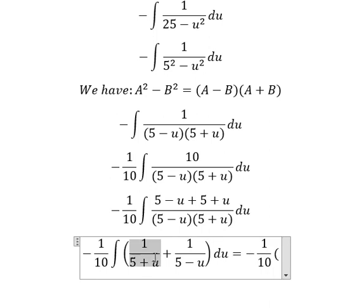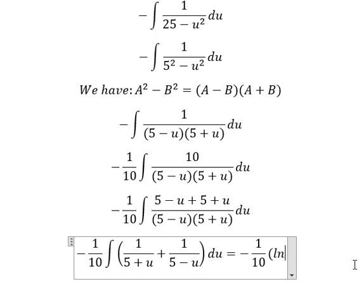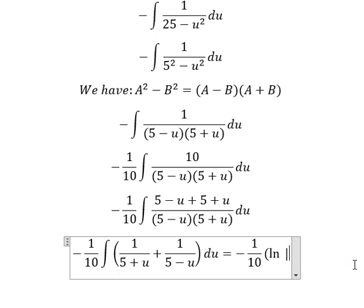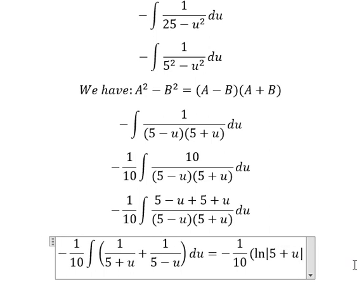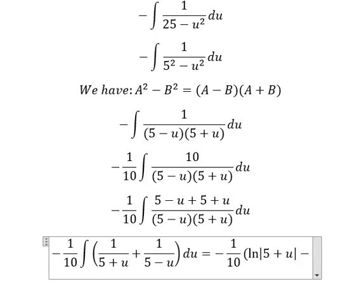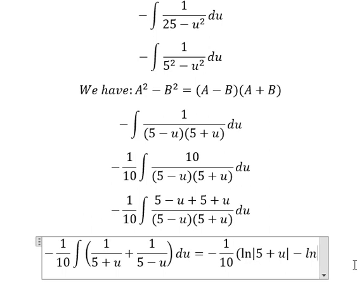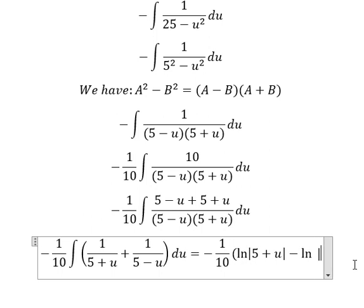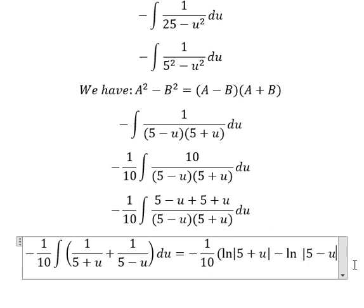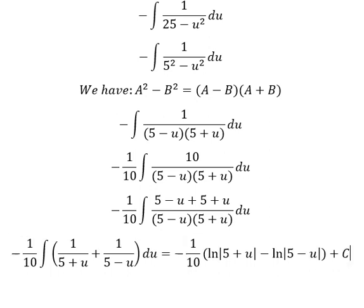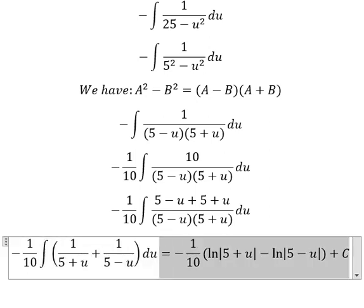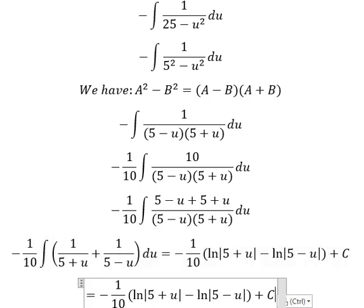This one is ln of the absolute value of 5 plus u, and the second one we have negative ln of the absolute value of 5 minus u, and we put plus C. So the answer is ln|5 + u| minus ln|5 − u| plus C.